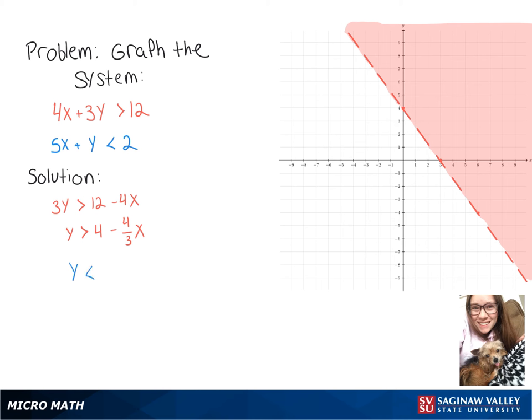Now we'll do the same thing with our other inequality. And we'll end up with y is less than 2 minus 5x. So we'll graph our line similarly. So we've got y intercept at 2, slope of negative 5. Throw a line on there.